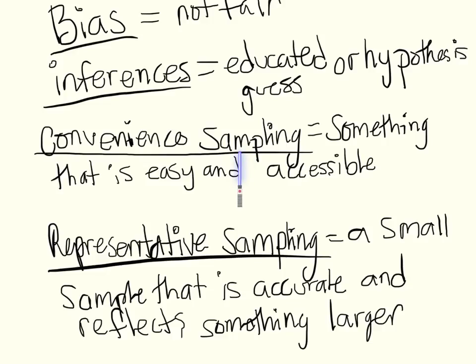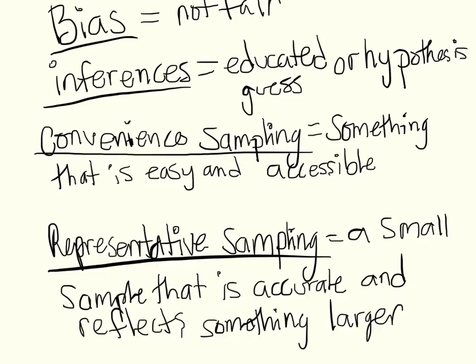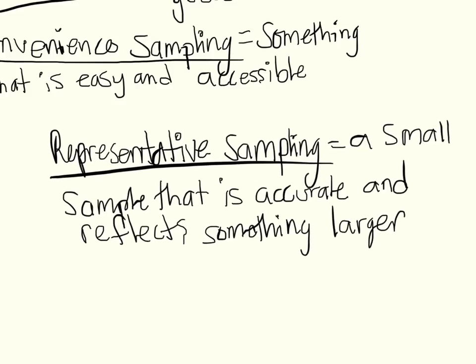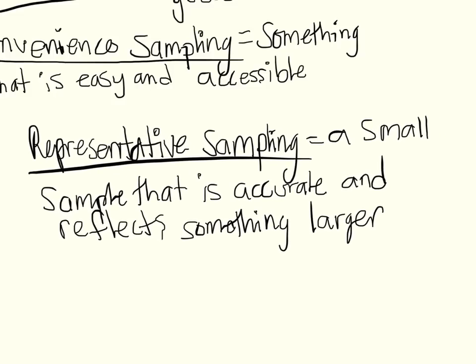Now representative sampling. Representative sampling is a small sample or a small survey that's accurate and reflects something larger. Let's say we want to find a survey for the United States. That means we would maybe get a small sample of people, maybe the most diverse city, maybe LA, and we can survey people in LA and that represents something larger, which would be the United States. But the small sample would be that it's going to be limited to one city.